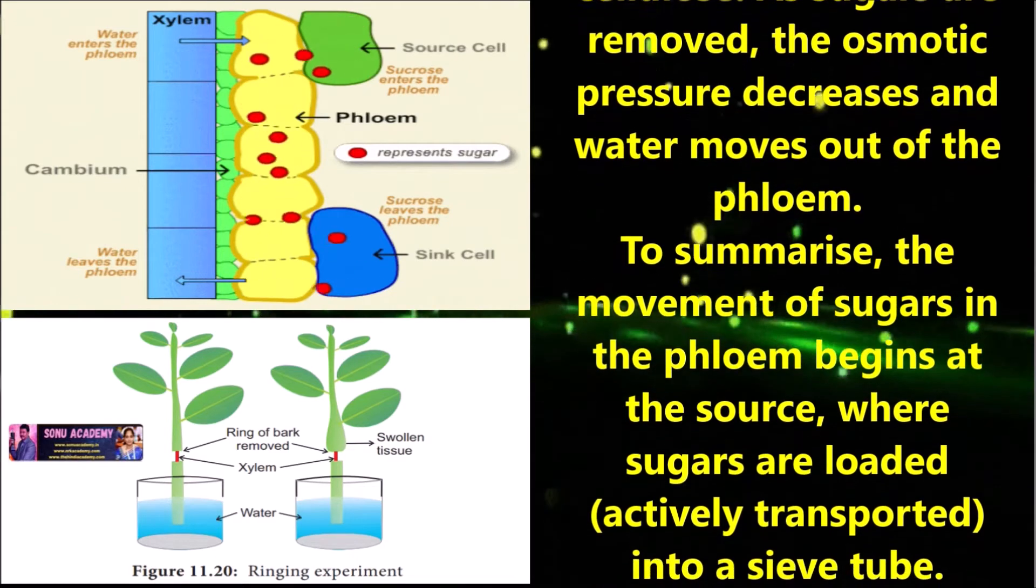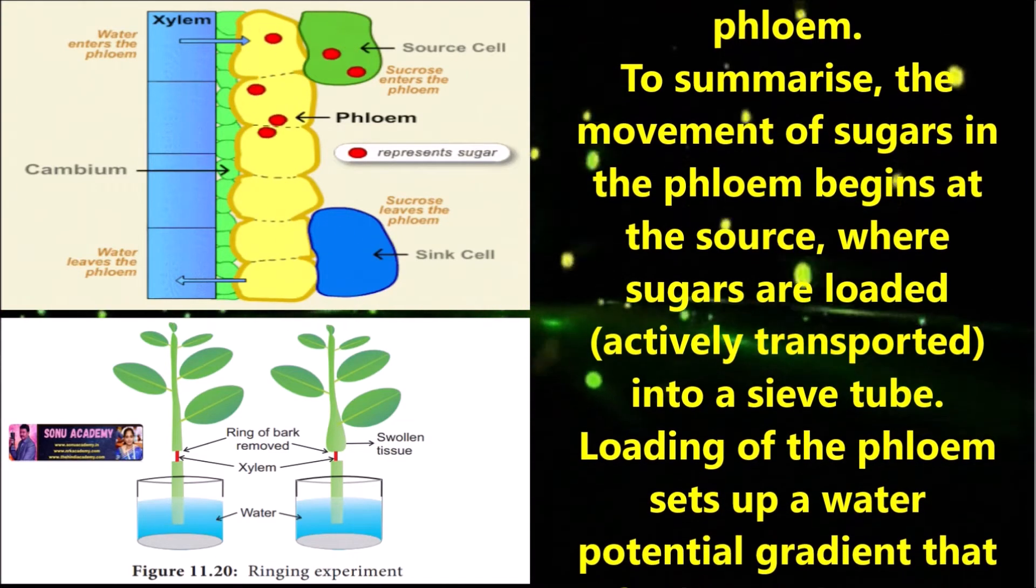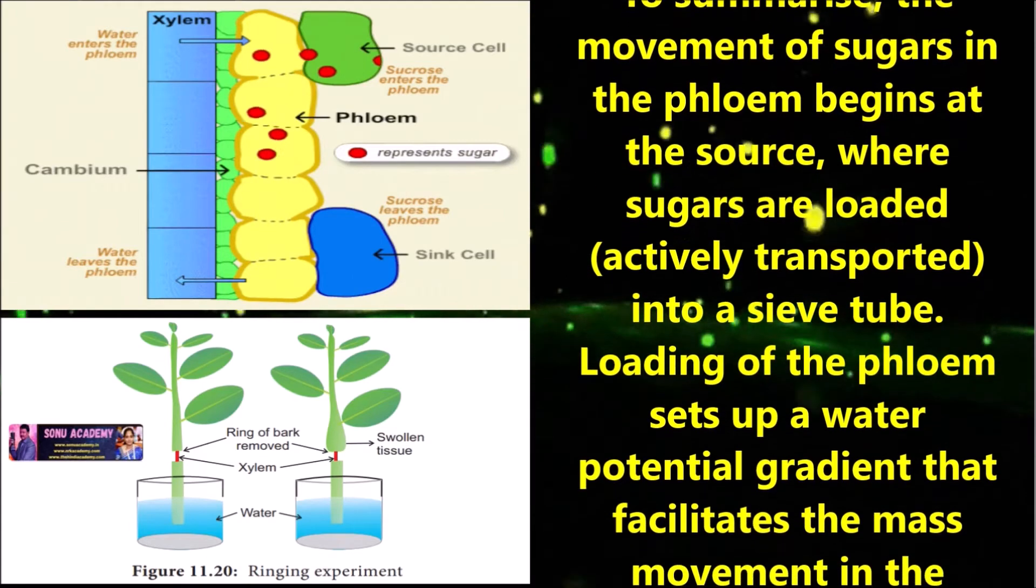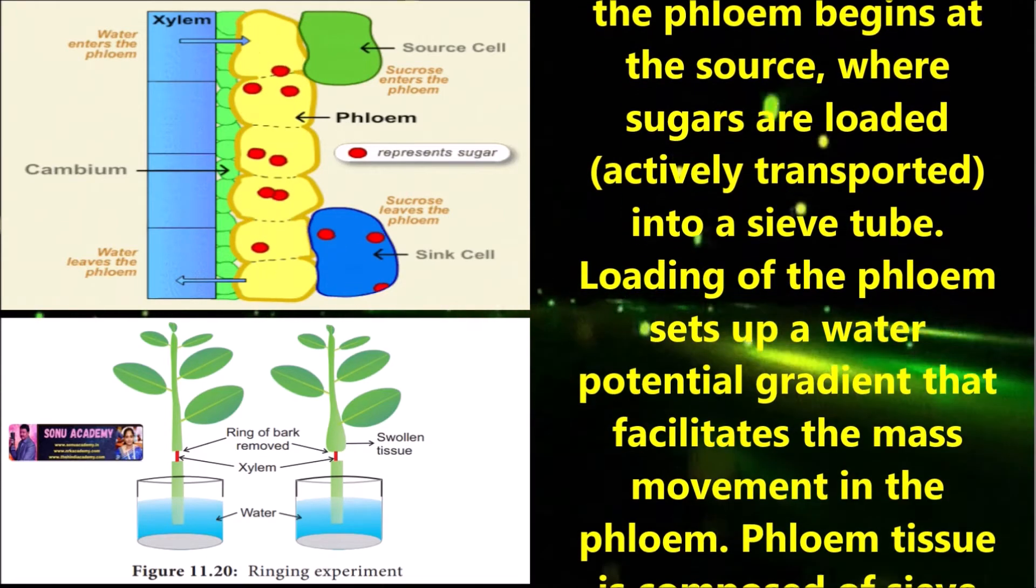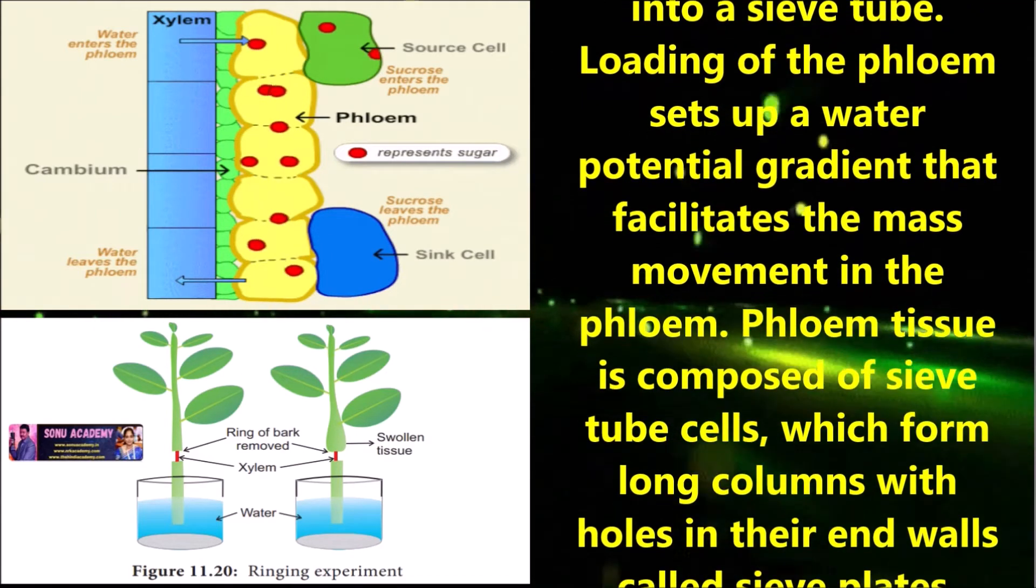To summarize, the movement of sugars in the phloem begins at the source where sugars are loaded into a sieve tube. Loading of the phloem sets up a water potential gradient that facilitates the mass movement into the phloem.